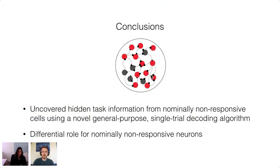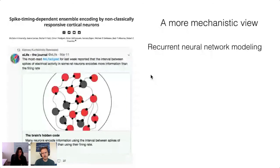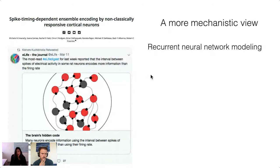In summary, we can uncover hidden task information from nominally non-responsive cells using a novel, general-purpose single-trial decoding algorithm applicable to any brain area in any behavioral test. These cells may be doing something interesting and different from responsive neurons. The question is: where do these responses come from? They seem potentially important for network function, but how can we test this? Even with state-of-the-art tools, circuit dissection experiments are complicated to interpret. Computational techniques have reached the point where we can rigorously test these ideas in silico first, then use the hypotheses generated to feed back into experimental work.